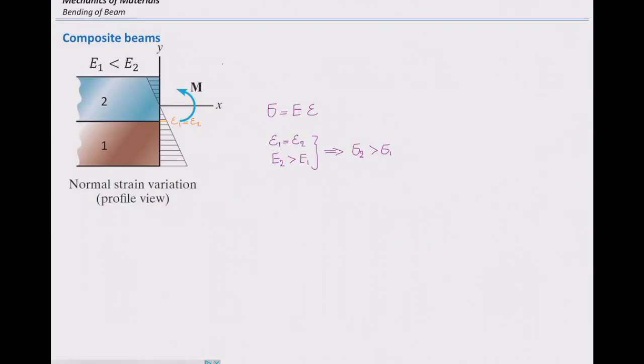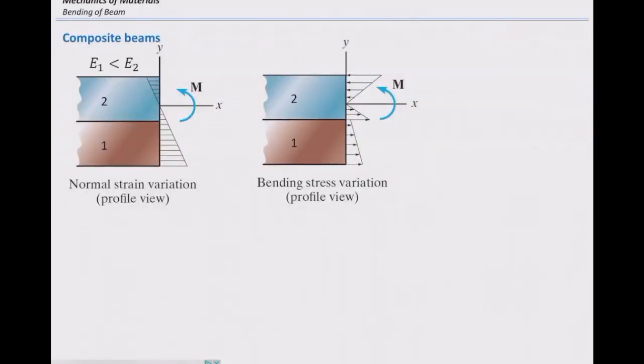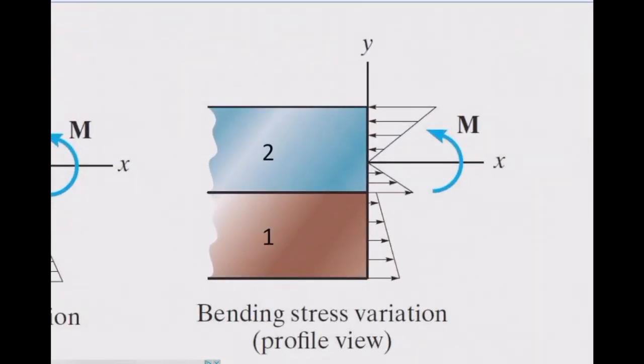In other words, stress distribution is not uniform anymore. That's the difficulty we have for solving composite beams. When two different materials with two different moduli of elasticity are combined together, the stress distribution is not linear anymore, not uniform anymore. We have to take care of that to determine the stress values.